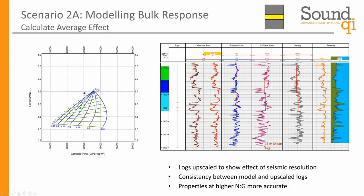We've upscaled the logs — shown as colored points on the template — to show the effect of seismic resolution. Going back to the logs and interpreting what we would have found: the top interval has a net-to-gross of 0.5, the middle 0, and the bottom 0.2, with both sand components at about 25% porosity. When we place those log interpretations on the upscaled seismic points with our template interpretation, especially for the upper higher net-to-gross layer, we've come very close to what we would have predicted from the template — about 50% net-to-gross and somewhere between 20 and 25% porosity.